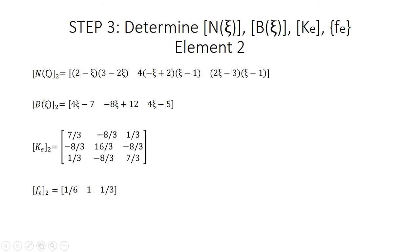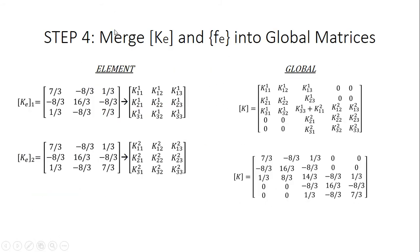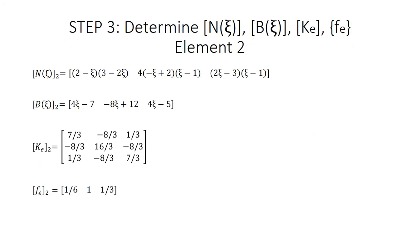We do the same thing for element 2. We form the interpolation function matrix for element 2 by pulling from its equations, then compute the B matrix by taking the partial derivative with respect to z. We solve for the element stiffness matrix and the F matrix for element 2 using the same equations as element 1, with the only difference being that the integrals go from 1 to 2 because element 2 spans that interval.